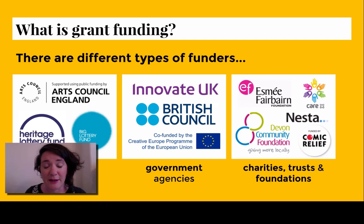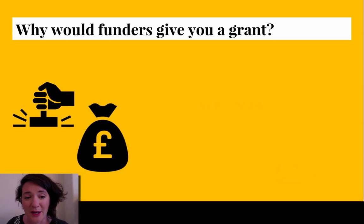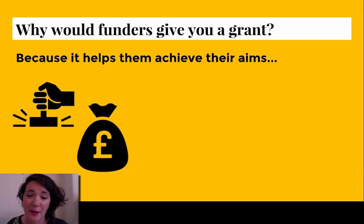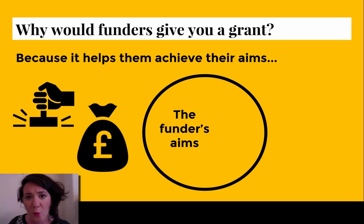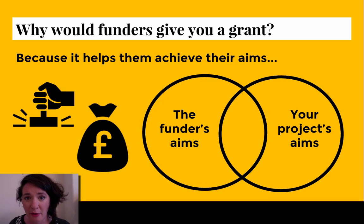Another important question is: why would funders give you a grant? The very simple answer is because it helps them to achieve their aims. When you're thinking about grants and making applications, you really need to focus on what those funders' aims are — what the funding body, charity, or trust says it's most interested in achieving. Then you compare those with your project aims, and that overlap is where you're working out your proposal and your application to them.